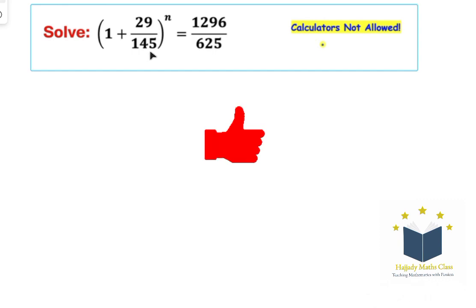So we have 1 plus 29 over 145 to the power of n equals 1296 over 625.